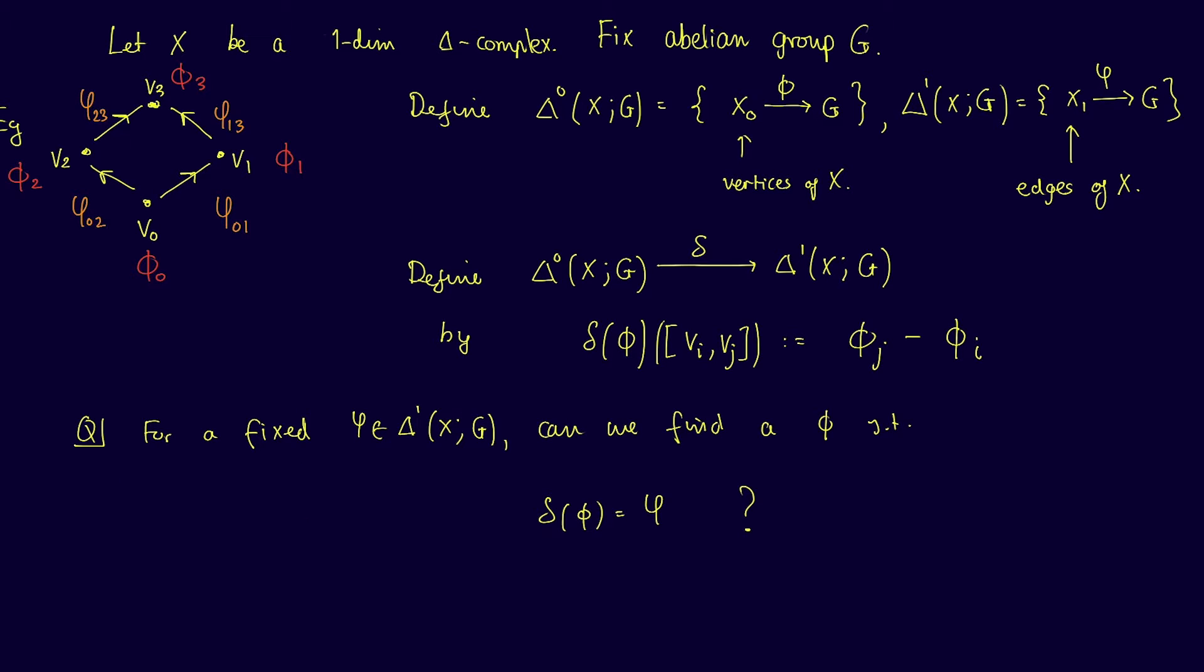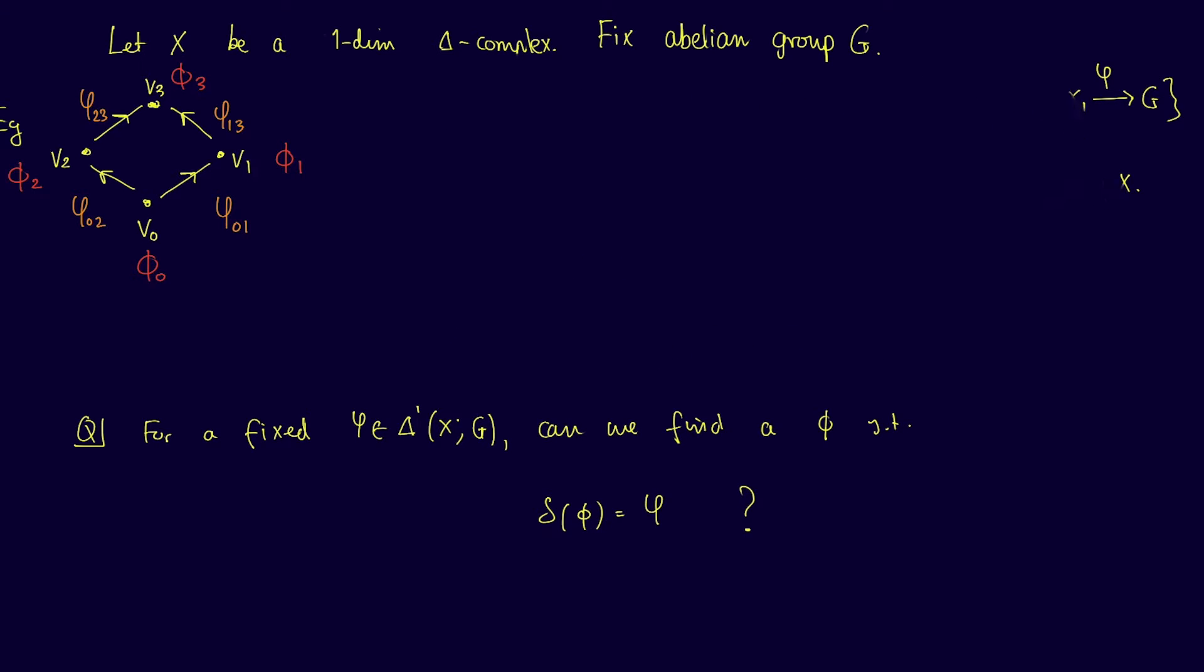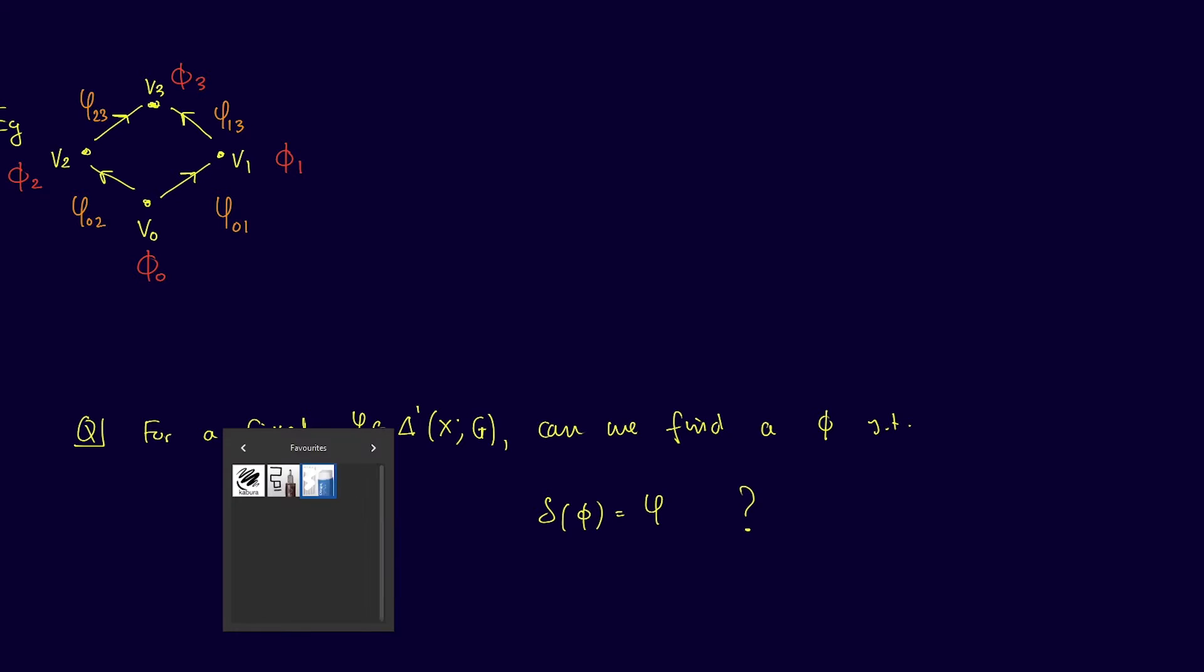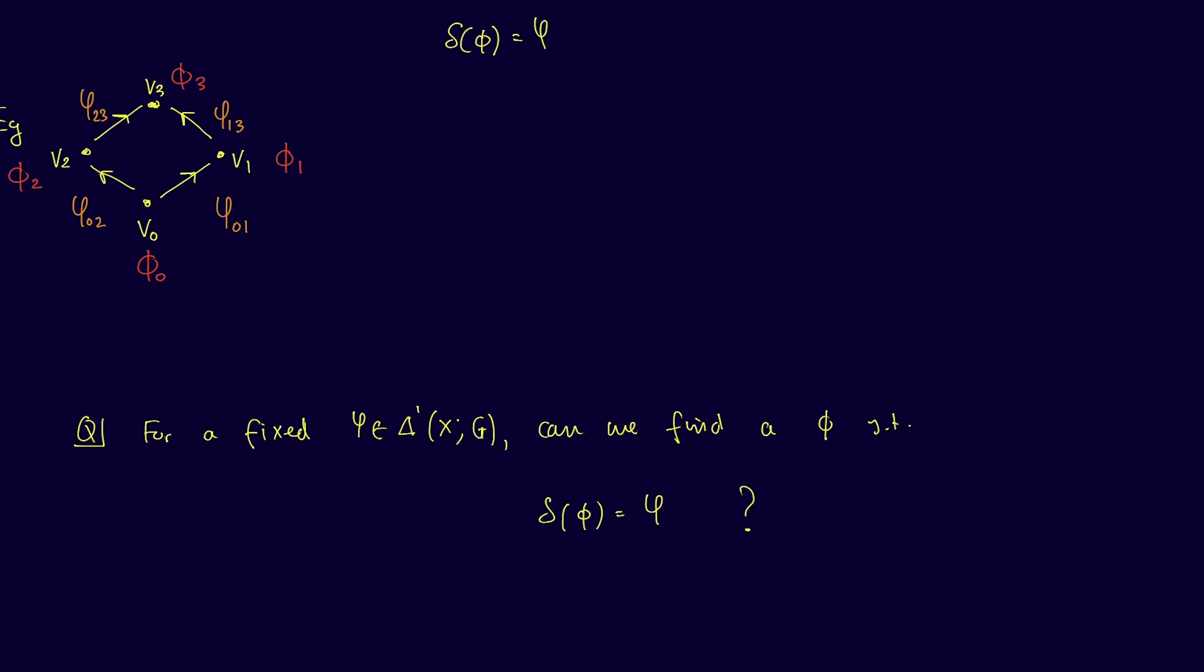Essentially we are interested in the image of the co-boundary map within Δ¹(X;G). So how can we answer this question? For this example, the equation δφ = ψ means that δφ and ψ must be equal on each edge of X. For example, δ of φ acting on the edge going from v₀ to v₁ must be the same as ψ acting on the edge going from v₀ to v₁. This leads to the following equation: φ₁ - φ₀ = ψ₀₁. Doing the same for the three other edges of X leads to the following system of equations.